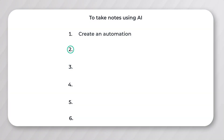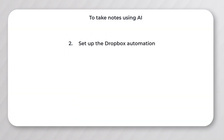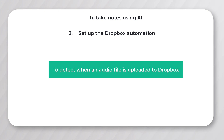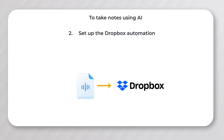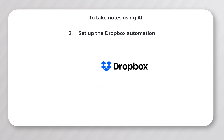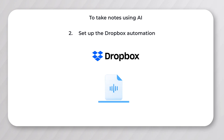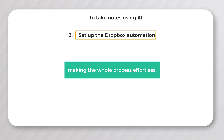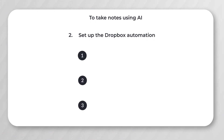Now let's get started by setting up the Dropbox part of the automation. In this step, we'll set up the automation to detect when an audio file is uploaded to Dropbox. Once that is done, every time you upload an audio file it'll detect it automatically and send it to ChatGPT for transcription, making the whole process effortless. To set up the Dropbox automation, we need to do three things — first we need to log into Dropbox.